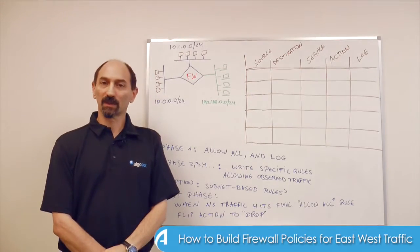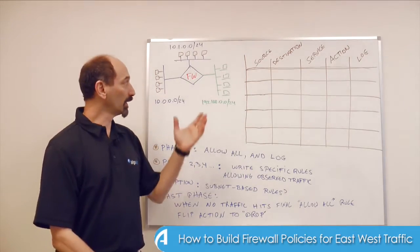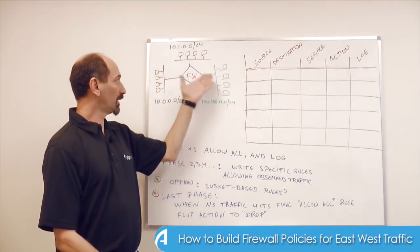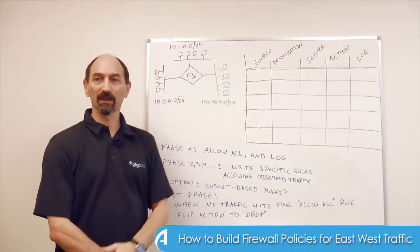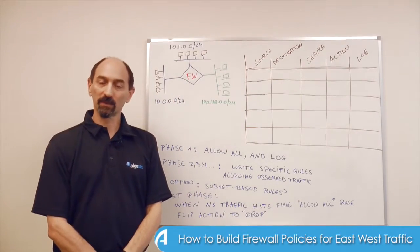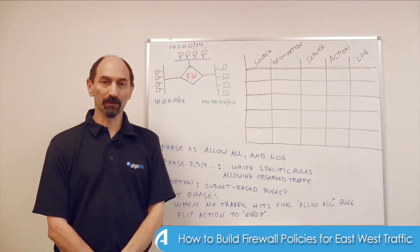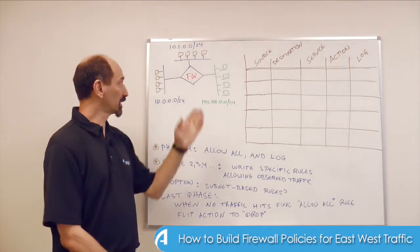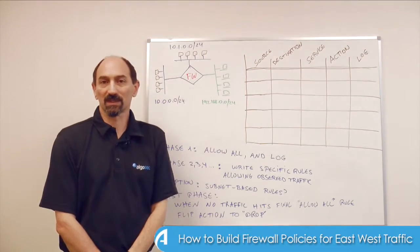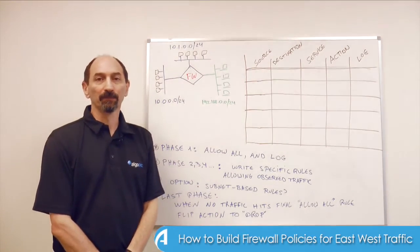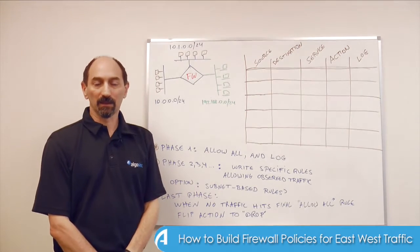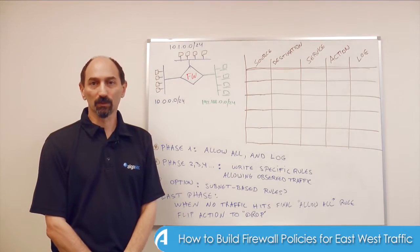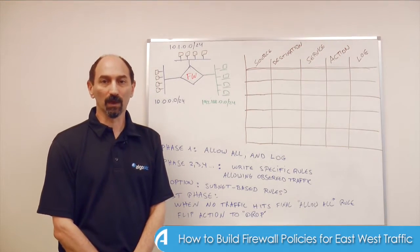The challenge we're faced with is that we don't really know what the legitimate traffic going through that firewall should be, because there was no firewall there before — it was just a switch — and we don't have good records indicating what needs to communicate with what.